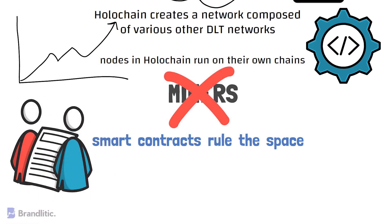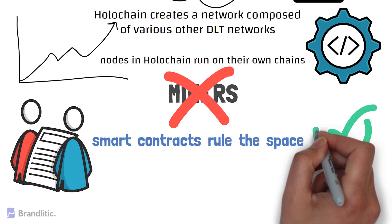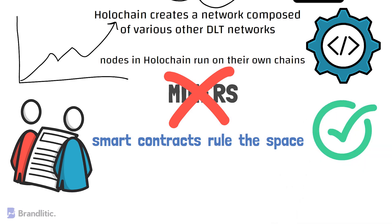Nodes running their own chains means they process ledgers that solely belong to them. This way, the relationship between various nodes on the network is completely trusted, decentralized applications have infinite space to operate in, and one can expect decentralized applications to perform at their optimum at all times.